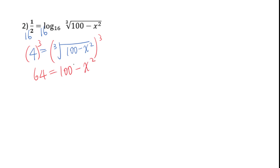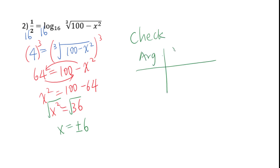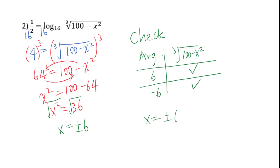Isolate x squared on one side. We get x squared equals 100 minus 64, which equals 36. So x squared equals 36. Then take the square root of both sides: x equals plus or minus 6. Then check the answer by looking at the argument: cubic root of (100 minus x squared). Plugging in positive 6 and negative 6 both give a positive argument, so x equals plus or minus 6 is the solution.